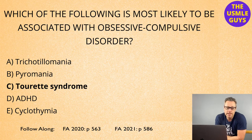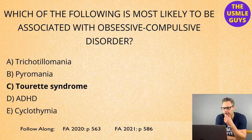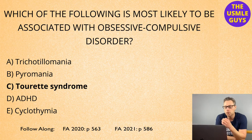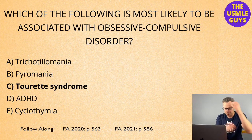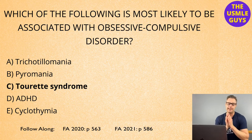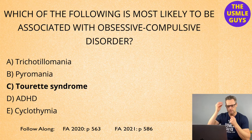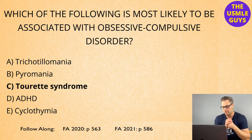OCD is associated with Tourette syndrome, which is associated with motor and vocal tics. Another condition to know is trichotillomania — a compulsion to pull out one's own hair, typically on the head but it can be anywhere on the body. It's easily recognized by areas of balding or thinning, mainly on the head. You might also see hairs of different lengths — a mix of short, medium, and long hairs — which can be a sign of trichotillomania.